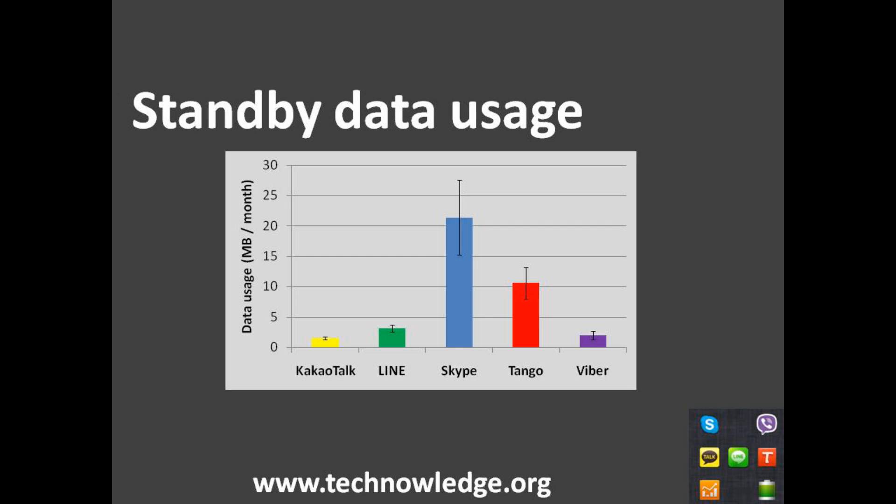The second thing we're going to look at is the standby data usage. These apps have to be on constantly in order to receive calls, so if you want to use them as a real alternative to network calls, you need to keep the app on in the background the whole time. The Skype app uses a lot more data in standby mode than any of the other apps — over 20 megabytes per month just to be idle in the background, without making any calls. KakaoTalk, Line, and Viber are very close to each other with very small differences, and Tango is somewhere in between at just over 10 megabytes per month. Even Skype's 20-plus megabytes per month is not a lot, but this will at least help you decide which app to choose.